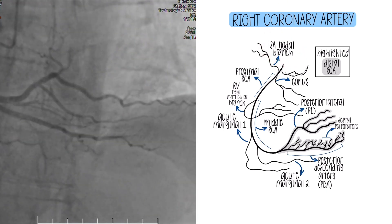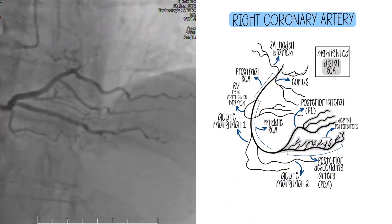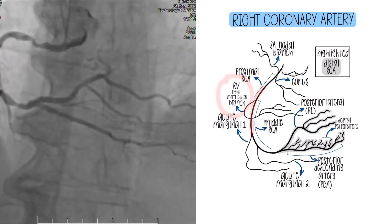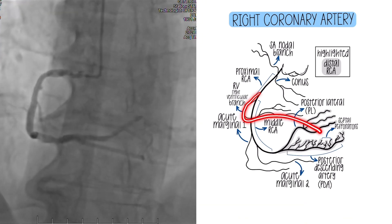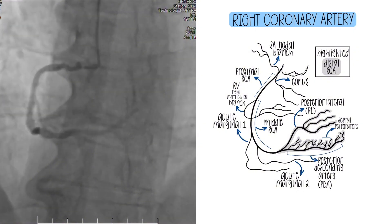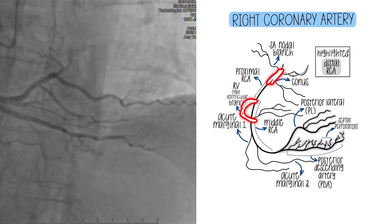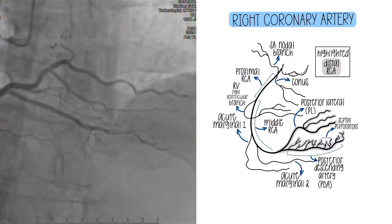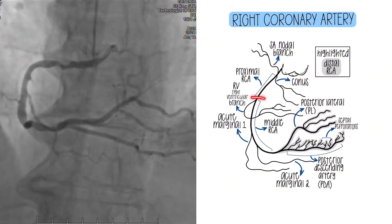Both the conus and the SA nodal branch, if they come off the RCA, will be in that proximal segment. What comes off next, in the middle segment, is the RV branch — the right ventricular branch. You'll see it branches off and goes toward the right ventricle, in a similar direction as the conus, but it's in the mid segment instead of the proximal segment. That's how you can tell the conus from the RV branch. So in order: the conus is usually in the proximal area, and the RV branch is in the middle area.